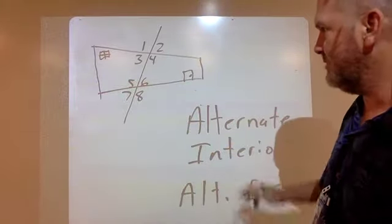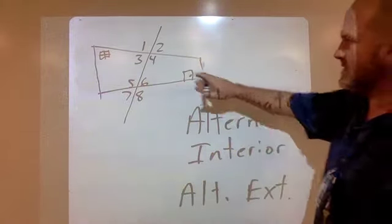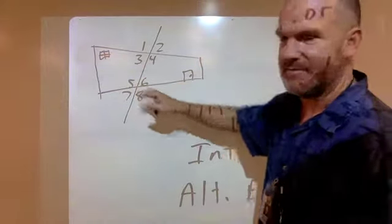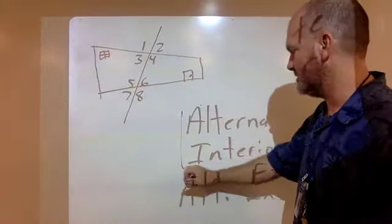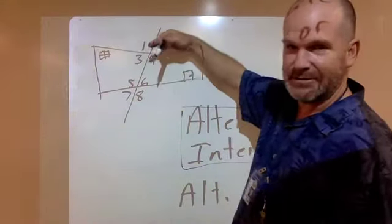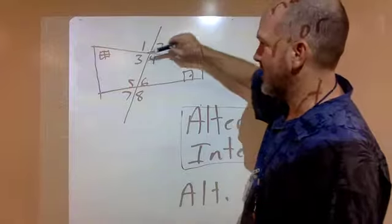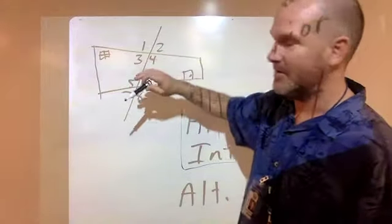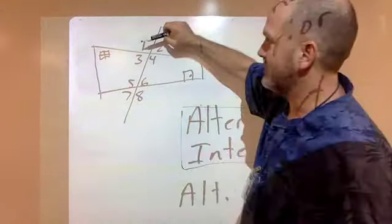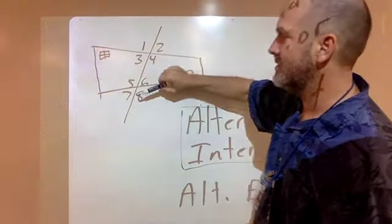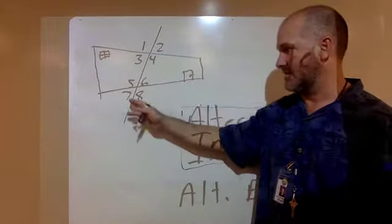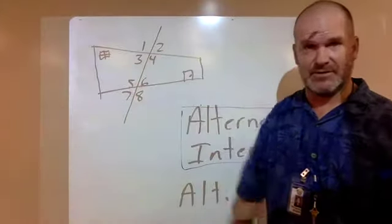Back to the house — inside the house are angles 3, 4, 5, and 6. Some combination of those four will be your alternate interior angles. On the exterior of our two lines we have angles 1, 2, 7, and 8. So we have four exterior angles and four interior angles.